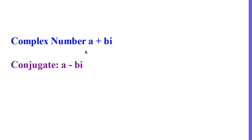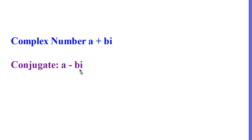A complex number is in the form a plus bi, where a is the real part and bi is the imaginary part. Its conjugate is a number that has the same real part but the opposite imaginary part. In other words, if the imaginary part of the original number is positive, then the imaginary part of the conjugate will be negative, or vice versa.